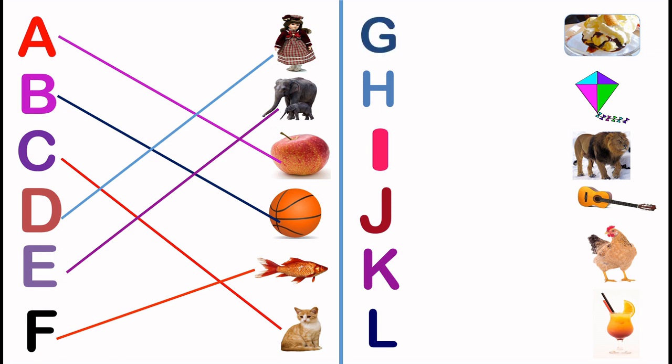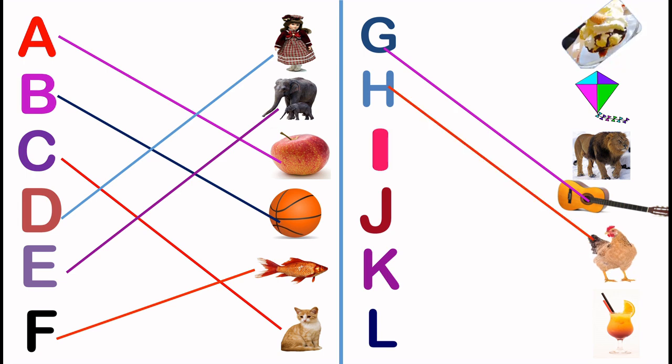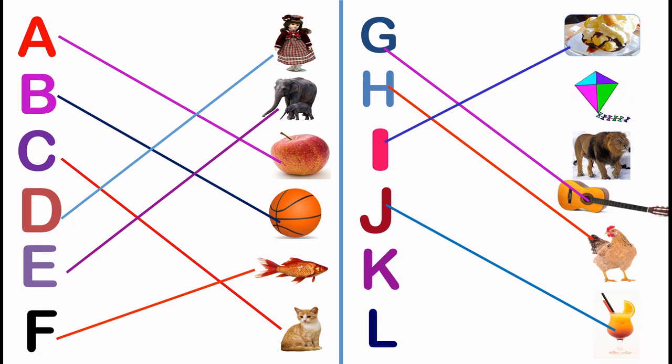G, G for guitar. H, H for hand. I, I for ice cream. J, J for juice. K, K for kite. L, L for lion.